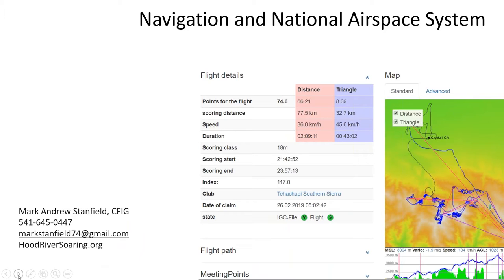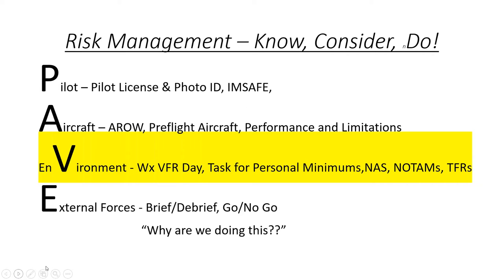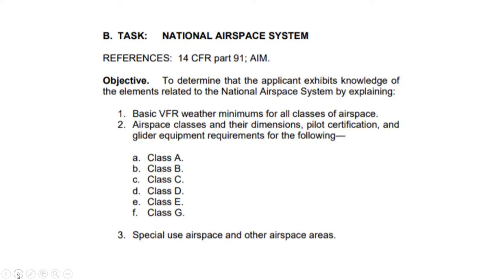We're back at the beginning, talking about navigation and the national airspace system. Our objectives include risk management. Tonight we're going to be talking about the environment we're in, looking at the national airspace and the space we'll be considering for setting up different cross-country flights. We've got two tasks tonight: looking at national airspace, VFR weather minimums and their dimensions, and pilot certifications and glider equipment requirements.